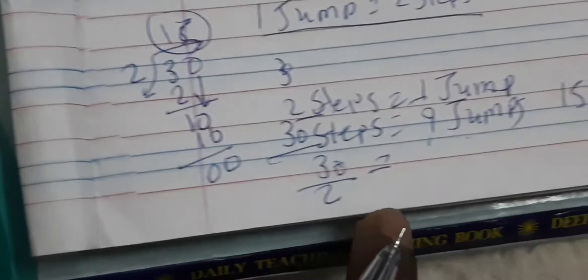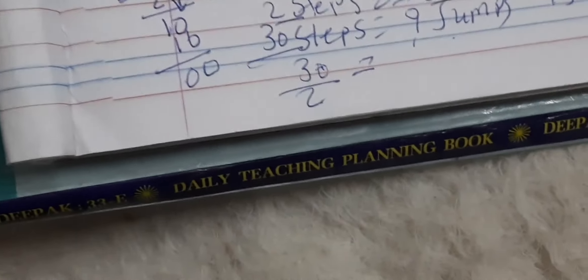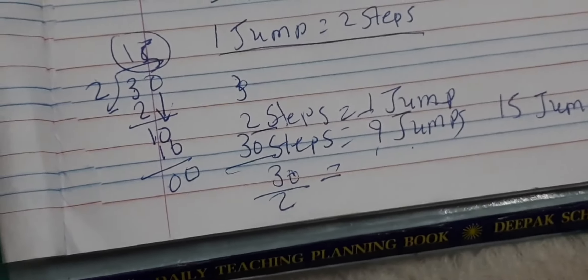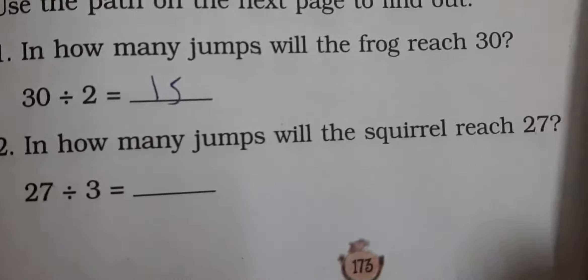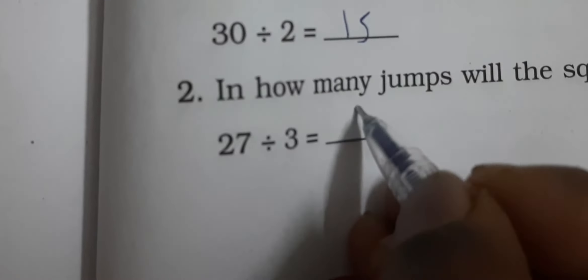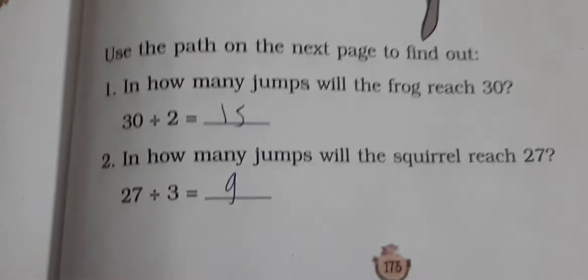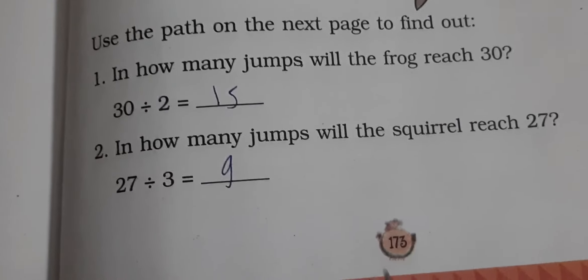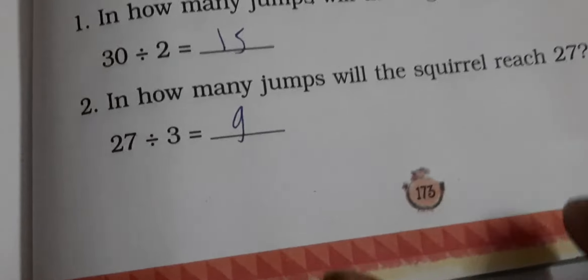Ek baar yeh step bana lo, phir aapko pata chal jaega kitne steps par hai aur har ek step kitne ka hai — use divide karo. Agar samajh mein na aaye to hamesha yeh step bana lo. Answer aata hai 15. Ab: in how many jumps will the squirrel reach 27? Squirrel 3 steps mein karti hai, to 2 ki jagah 3 daalo aur 30 ki jagah 27 daalo. 27 divided by 3 karo — 3 ka table se aasaan hai. Jab jumps dhundhne hain to step ko jump se divide karo.